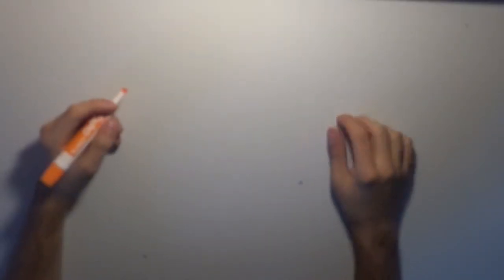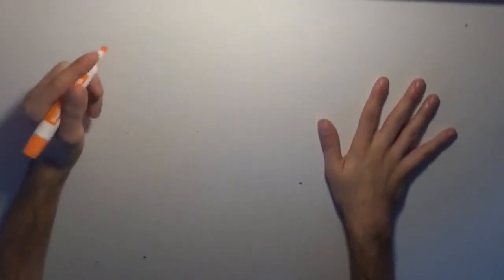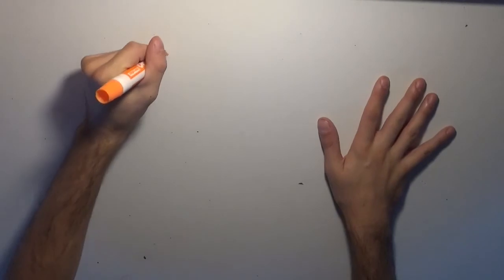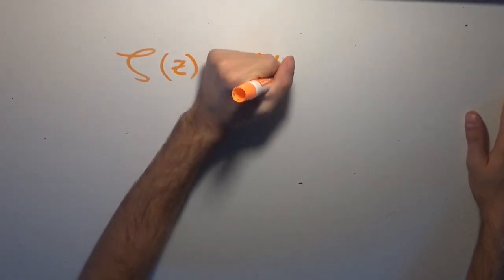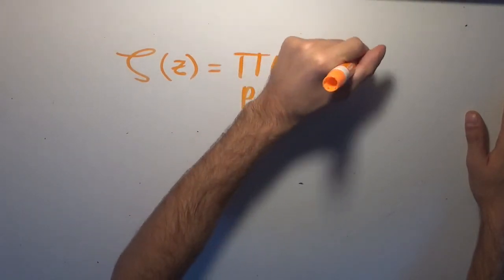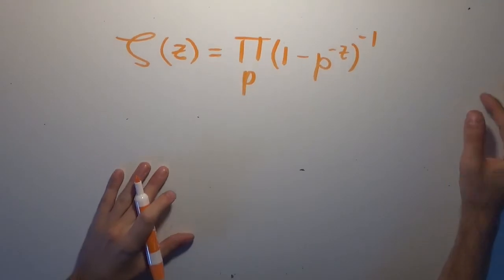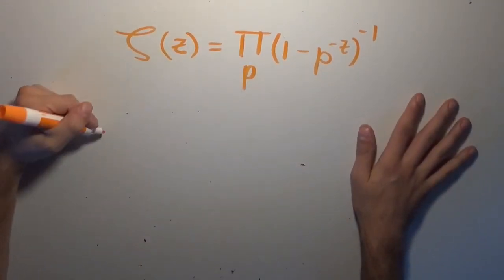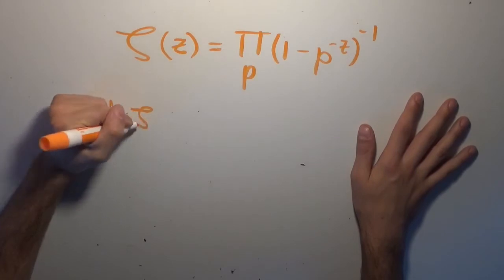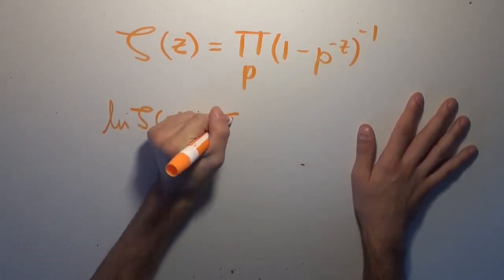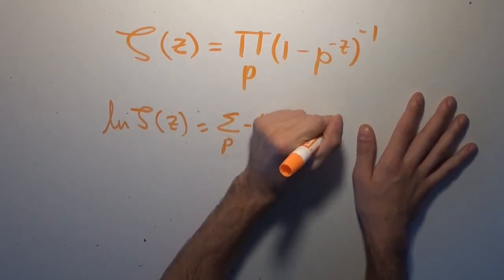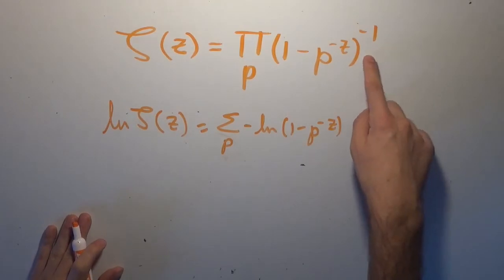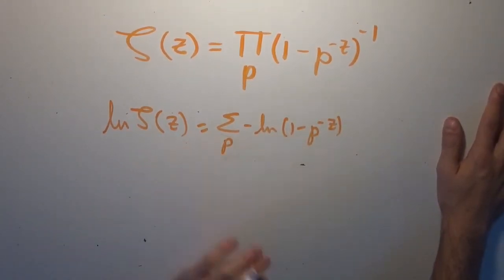We have to go through the zeta function again, taking the logarithm of its product form. We remember from the video where I proved infinitely many primes that the Riemann zeta function ζ(z) can be written as a product over primes: ∏(1 − p^(−z))^(−1). Taking the natural logarithm of both sides, ln(ζ(z)) equals the sum over primes of −ln(1 − p^(−z)), since the logarithm turns a product into a sum.